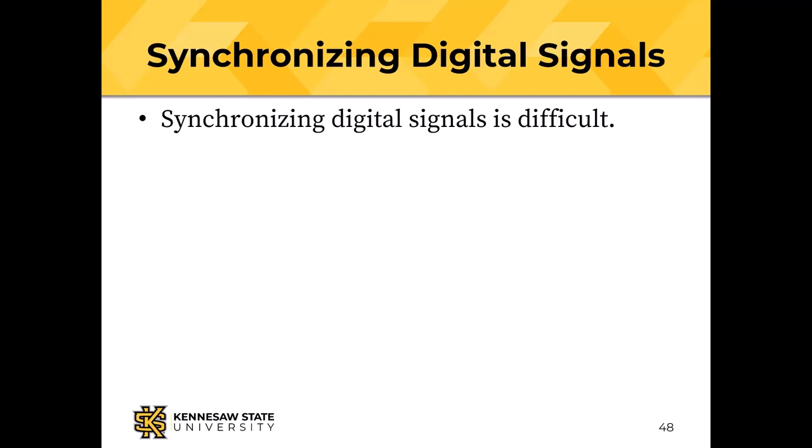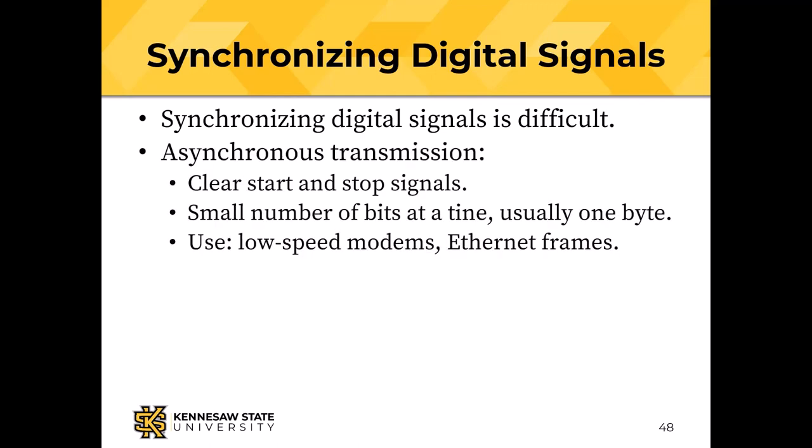People will still misuse 'broadband' to mean fast. The faster a signal changes, the more difficult it is to synchronize transmitter and receiver — they must be synchronized or we lose or garble data. In asynchronous transmission, start and stop signals frame a small number of bits — used in low-speed modems and Ethernet frames.